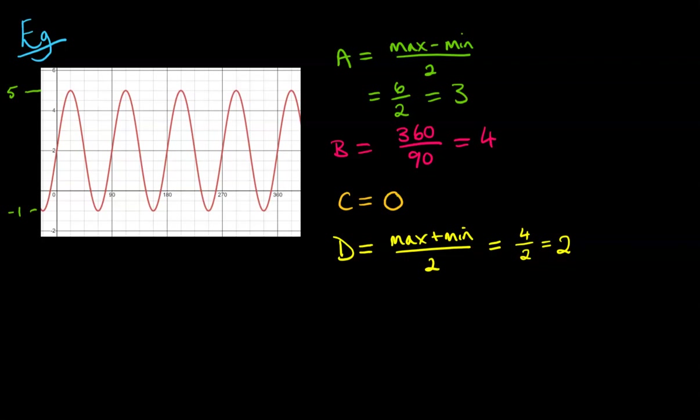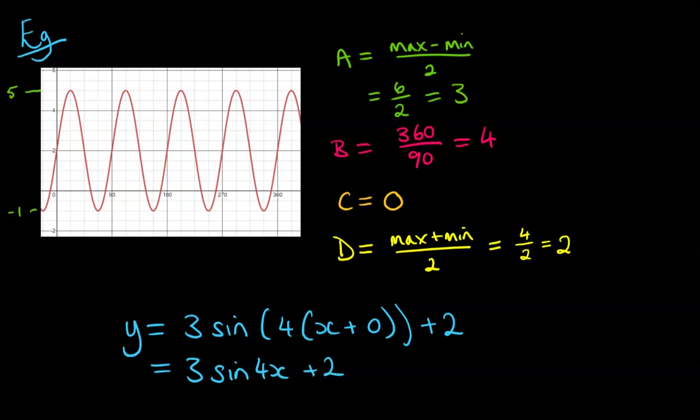So one last thing is to put this together into an equation in the form that we had on the previous view. So A is 3, sine of 4x, now we've got, this would have been, I'll write it out in full and then tidy up. So 4x plus 0 for that 0 value of C, and then add 2. So this would be 3 sine of 4x plus 2.